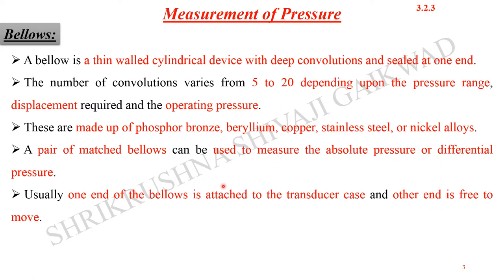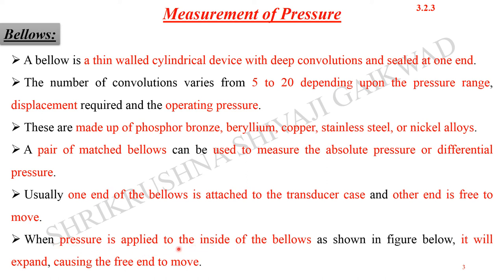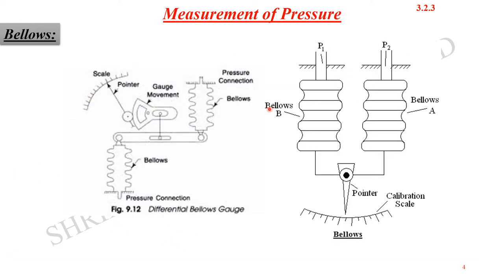One end is kept free and the other is sealed. When pressure is applied to the inside of the bellows, it expands, causing the free end to move. This free end movement causes the pointer to deflect on a calibrated scale. As pressure increases, the pointer moves to the right-hand side, giving information about the pressure. For a differential bellows gauge, the pressure connections are on one side and gauge movement is read through the pointer on the calibrated scale.